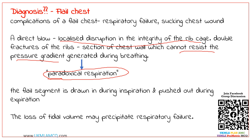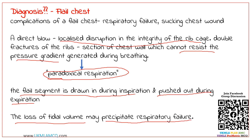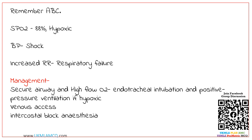In paradoxical respiration, the flail segment is drawn in during inspiration and pushed out during expiration. The loss of tidal volume of the lungs may precipitate respiratory failure. This is a fatal condition and a medical emergency. Always remember your ABCs — airway, breathing, circulation. Here the patient is hypoxic, in shock, and has an increased respiratory rate which may lead to respiratory failure.